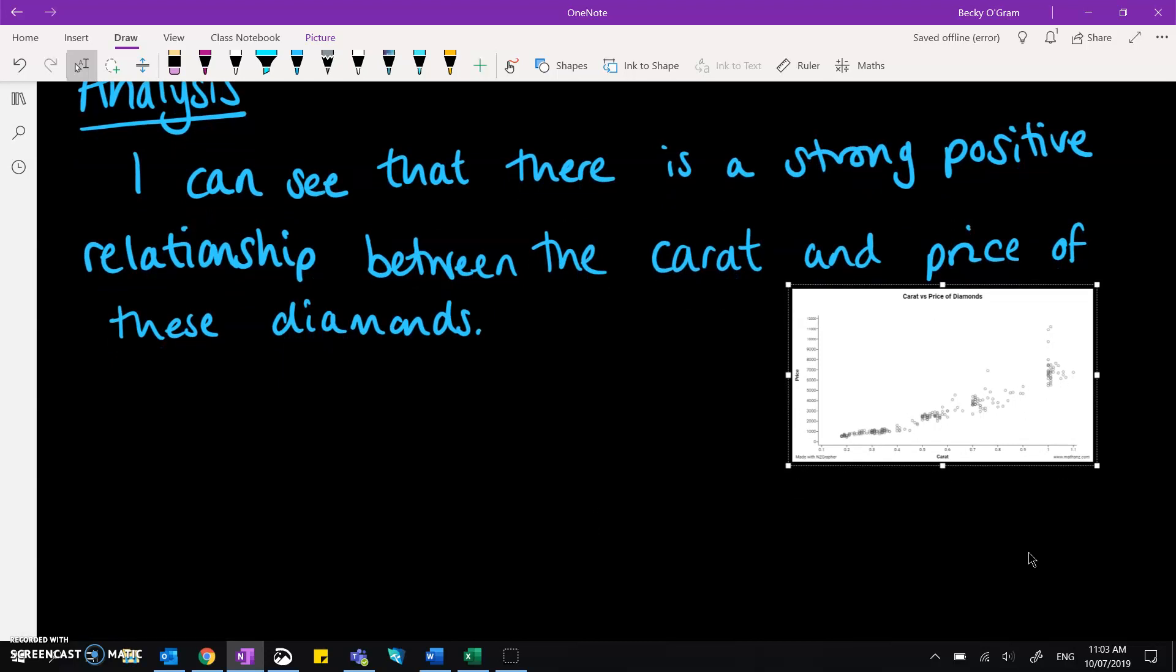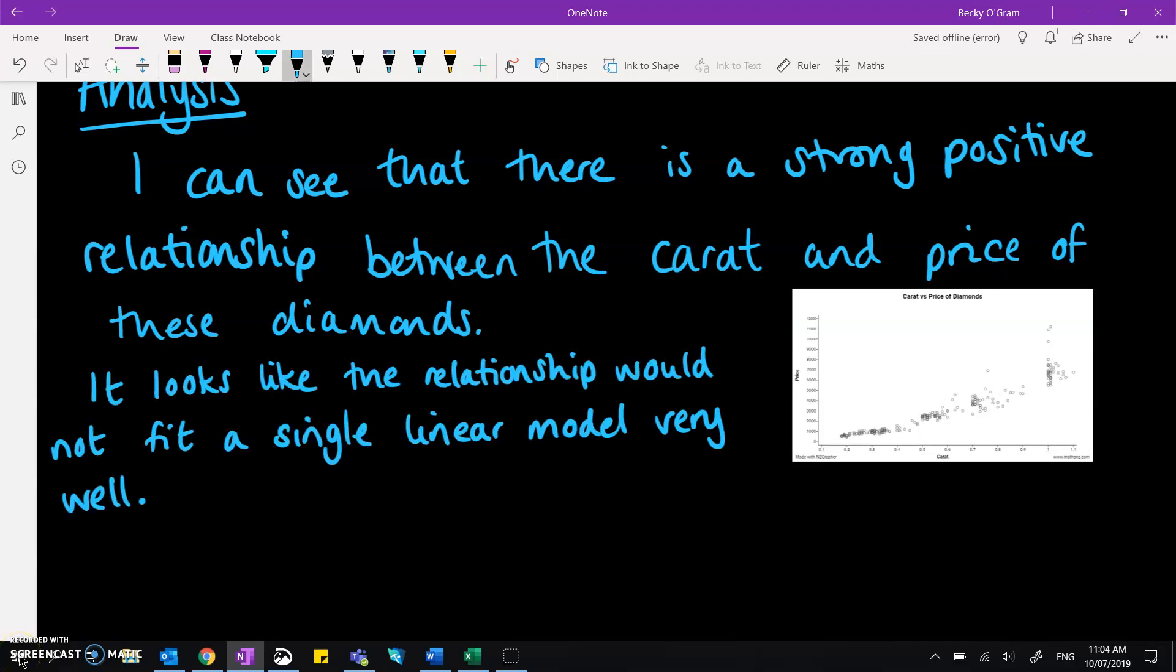I don't think this one is particularly suited to one straight line, but it could possibly be two straight lines. Maybe here and here they do something different. That would be called piecewise. So we might want to find a way to talk about that. So we can say something like it looks like it wouldn't fit a single linear model very well. And we could expand on that a little bit to build this up into merit. I'll talk a little bit more about how we could get merit into these sentences.